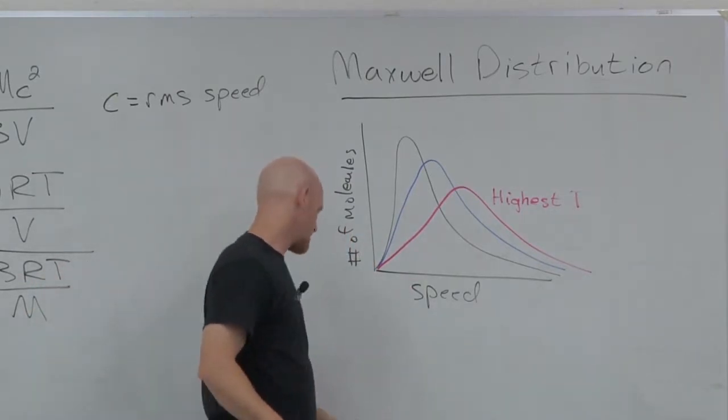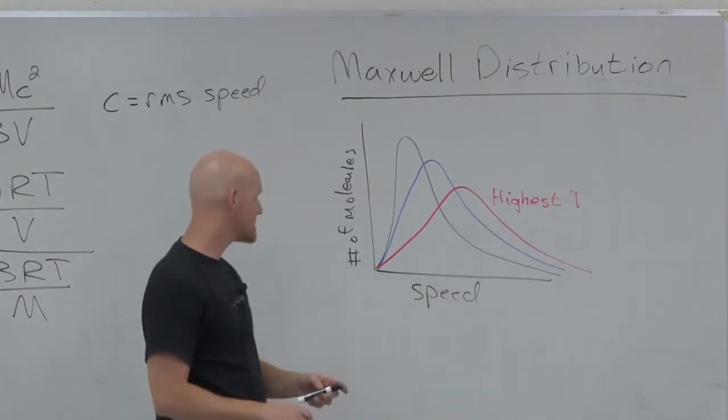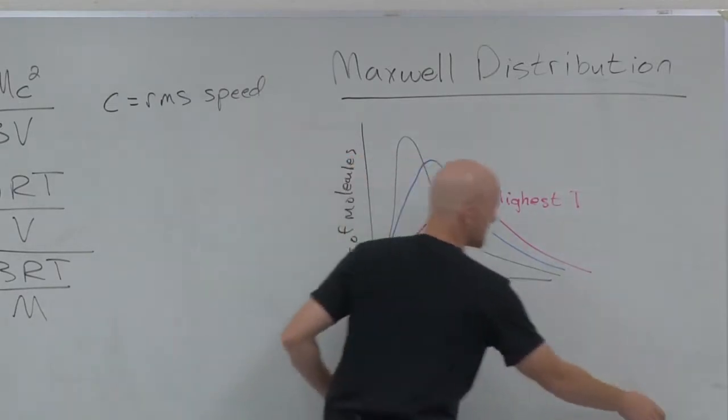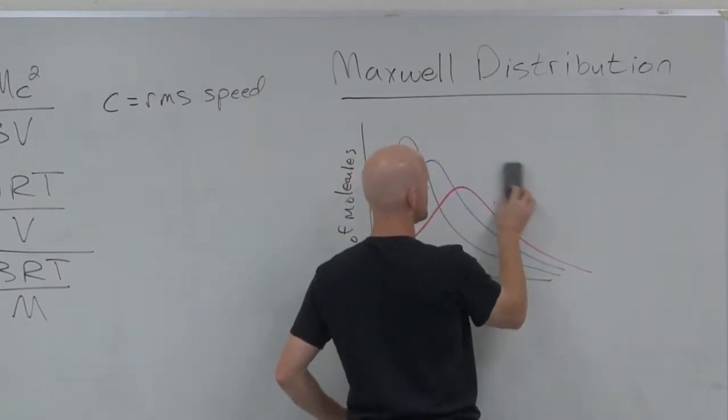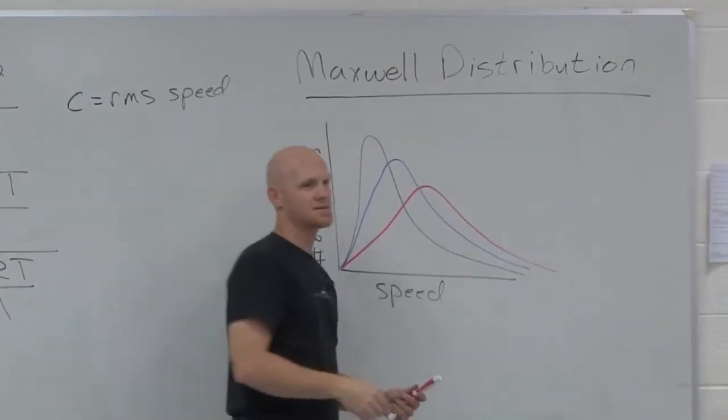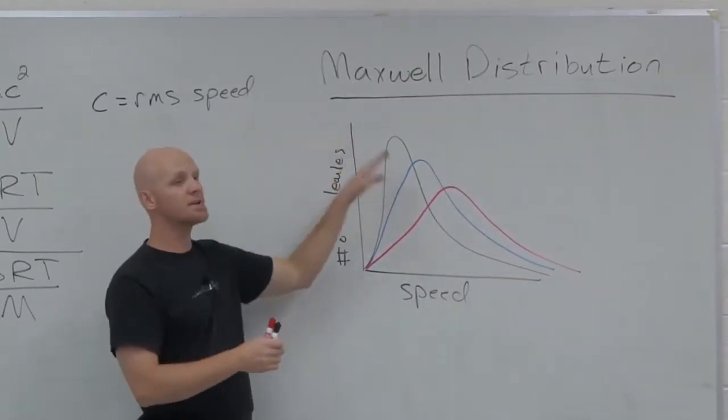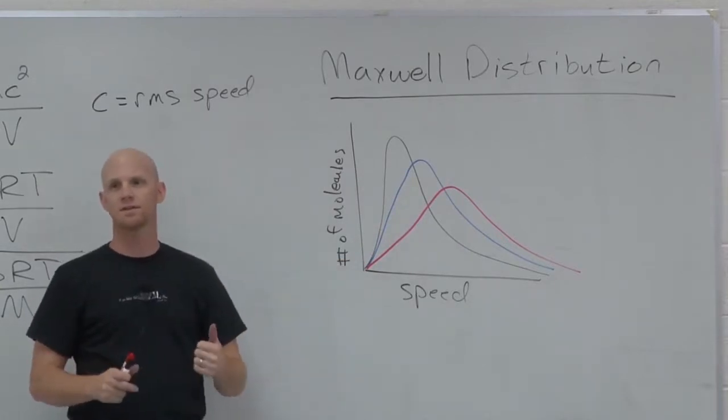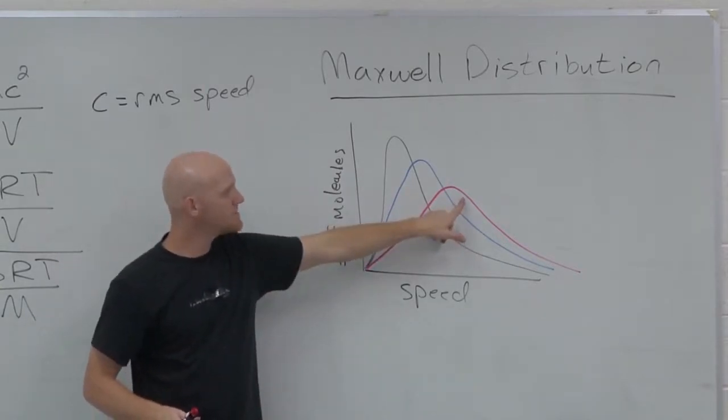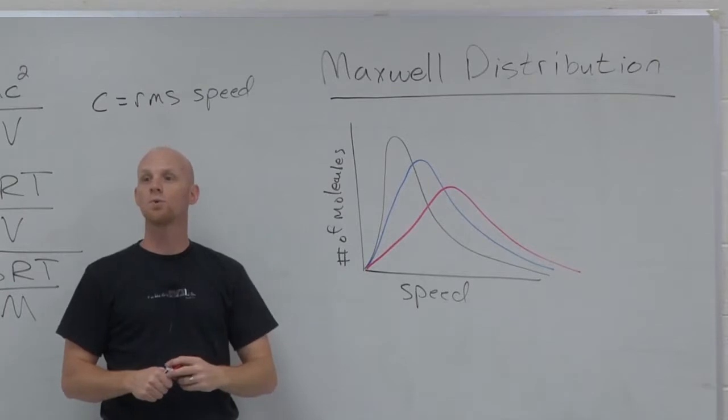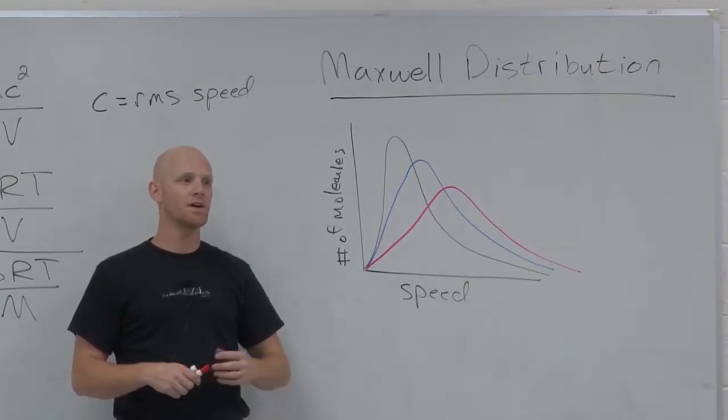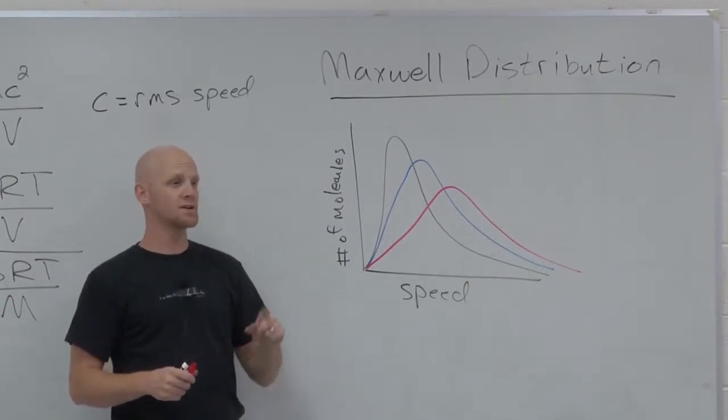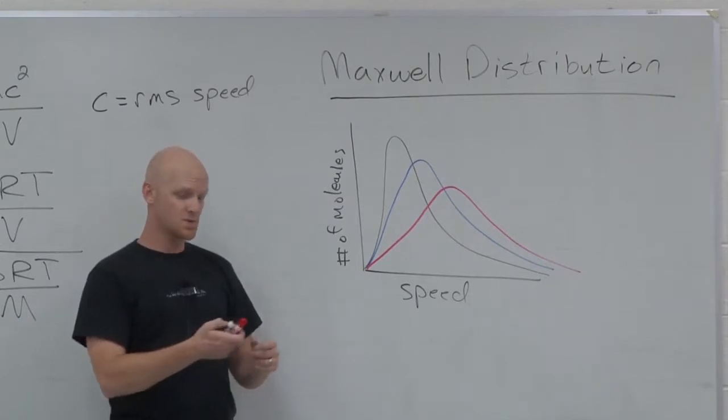The other way this can work though, is instead of having this be a function of temperature, this can be a function of molar mass. If I had actually had three different gases with different molar masses plotted, what would you say about the red graph? What would probably be true about his molar mass? All done at the same temperature anyways. Lower molar mass? It would be lower molar mass.